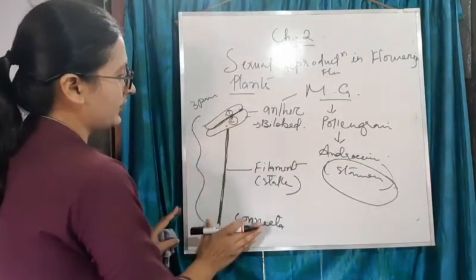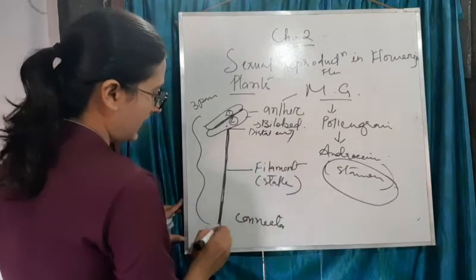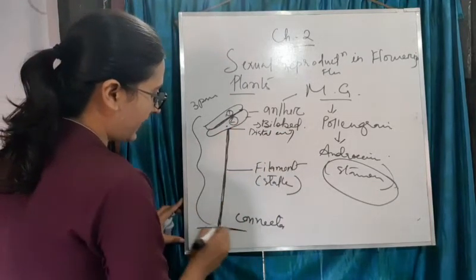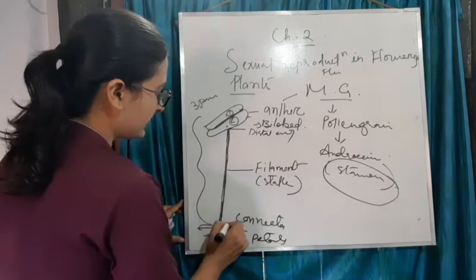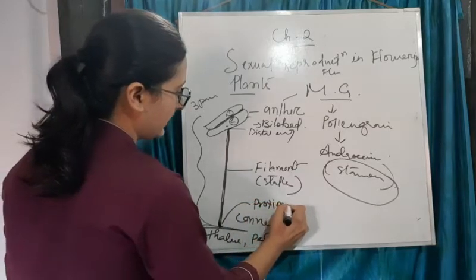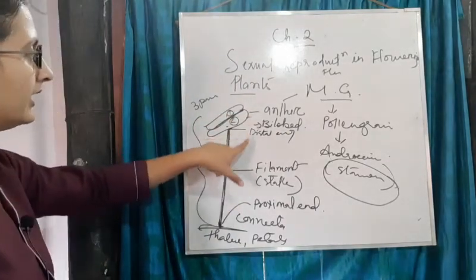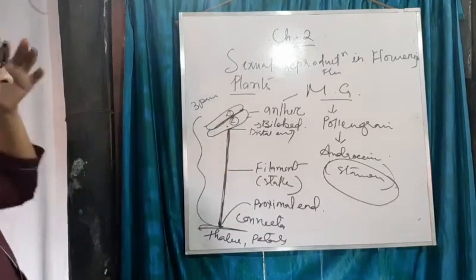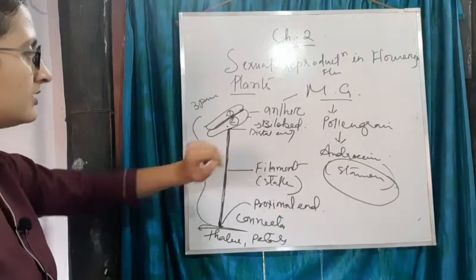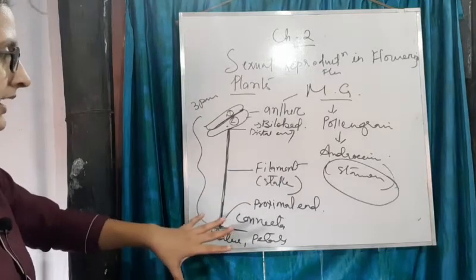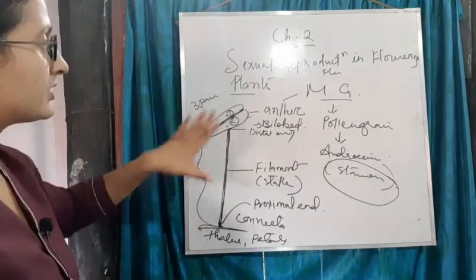This is the external structure of the stamen. The upper end is called the distal end. The filament is attached with the thalamus or with the petals at the lower end, which is called the proximal end. To summarize: the stamen has three parts - anther, filament, and connector. The anther is bilobed, the filament is a long slender structure, and the upper end is the distal end while the lower end is the proximal end.